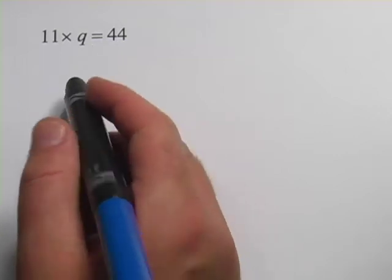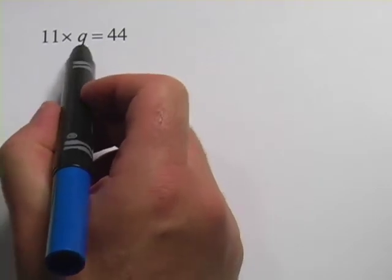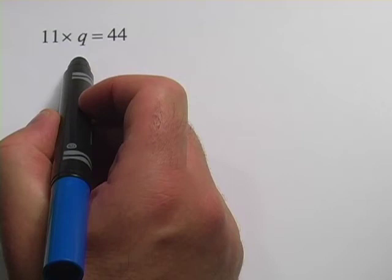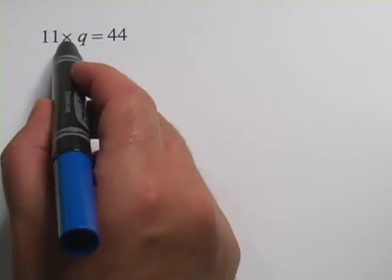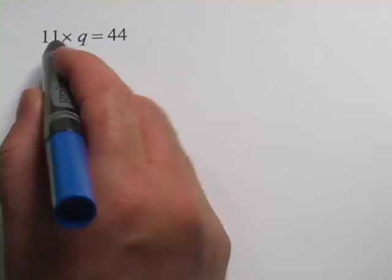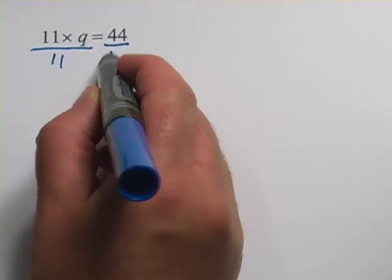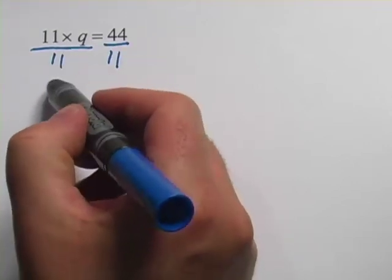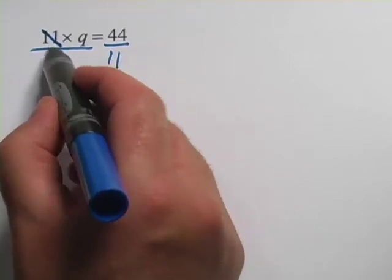Maybe that's not obvious to you. Another way to do this is to take this q and try to get it alone. This would be the algebra way to do it. Because it's being multiplied by 11, you would undo that by dividing both sides by 11. When you do that, when you divide both sides by 11, these 11s cancel.